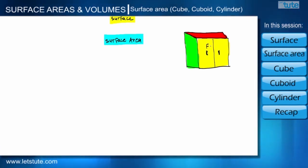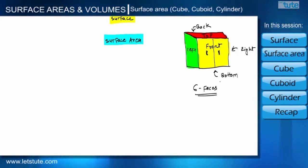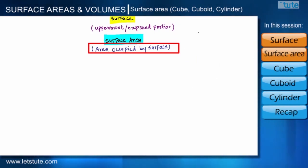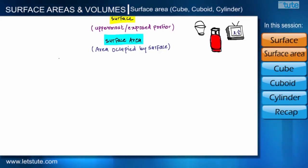In the example of this cupboard, we can see that we have painted it from six sides: front and back, top and bottom, left side and right side. There are total six faces which we have painted from outside, and all these faces are called the surface of the cupboard. The uppermost or exposed portion of any object is called its surface, and the area occupied by that surface is called the surface area. We are surrounded by objects like bucket, TV, and gas cylinder, so in this session we will discuss how to find the total surface area of some important objects.